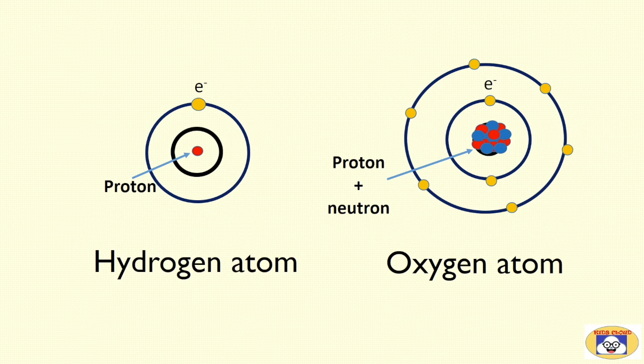We can get this information for oxygen atom also. For oxygen, number of protons is equal to number of electrons and that is equal to 8. From this information we can represent these atoms as follows. In case of hydrogen, only one proton is present in the nucleus and there is no neutron, while single electron is spinning around the nucleus. In case of oxygen, 8 protons and 8 neutrons present in the nucleus, while 8 electrons are spinning around the nucleus.